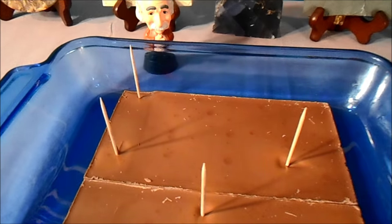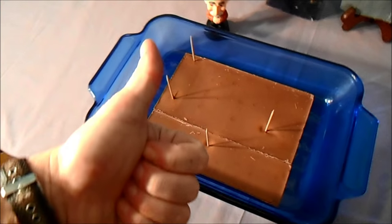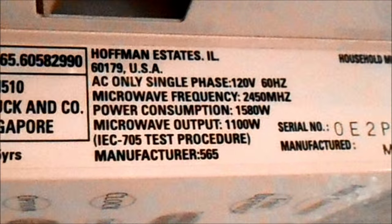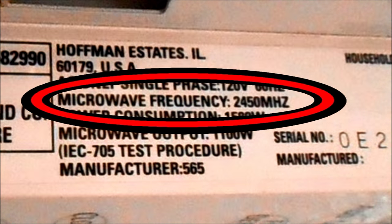Once your toothpicks are in place, you're going to need to let your chocolate sit and cool for a while and solidify. While you do that, you've got another mission. Find the frequency of your microwave. Should be labeled somewhere, often on the inside door. And ours here is 2450 megahertz.